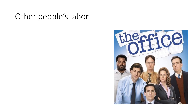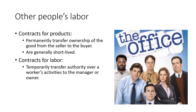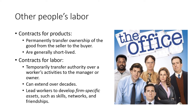Now let's think about other people's labor. We have contracts for products — a permanent transfer of ownership from a seller to a buyer — and these contracts are generally short-lived. When we think about a labor contract, these temporarily transfer authority over a worker's activities to the manager or owner, and sometimes these can extend over decades. This can lead workers to develop very firm-specific assets such as skills, networks, and friendships. Regardless of field — computer science or otherwise — you'll have different firms specializing in different areas, and you'll develop and hone those skills over a long period of time.